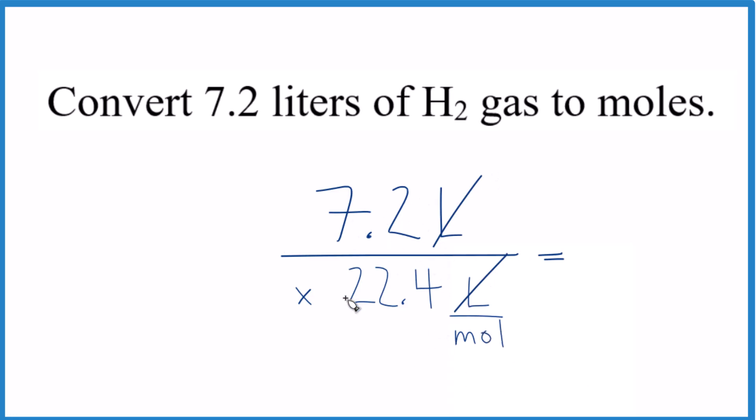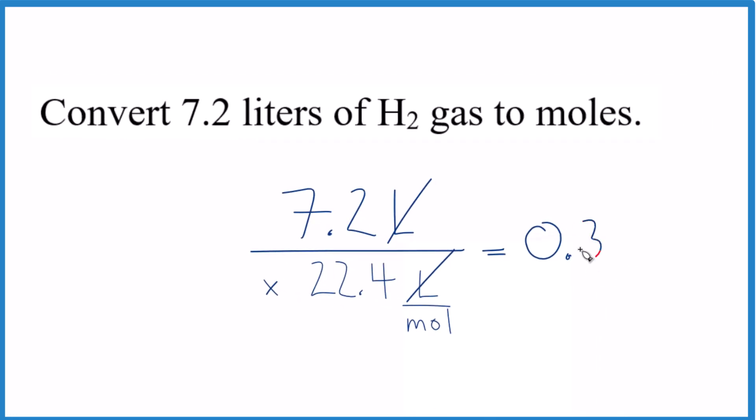7.2 divided by 22.4 is 0.32, with units of moles. So when we convert 7.2 liters of H2 gas to moles, we get 0.32 moles.